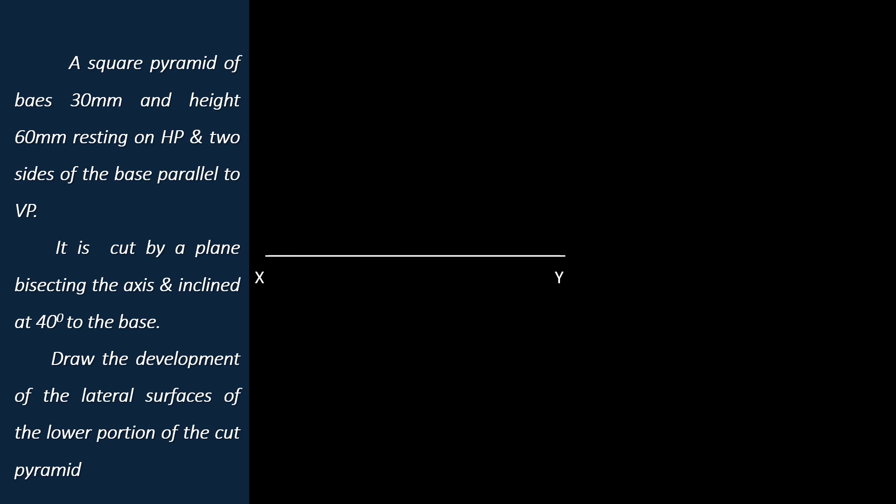Reference line XY. Top view of the square pyramid as two base edges parallel to VP, which is 30mm. Let's name the solid base corners as A, B, C, and D. Find the apex O by joining any two opposite corners and name the axis as OM. Now the top view is completed.